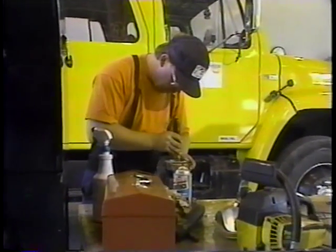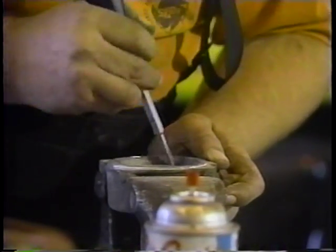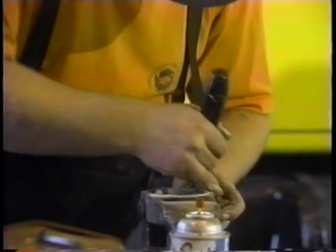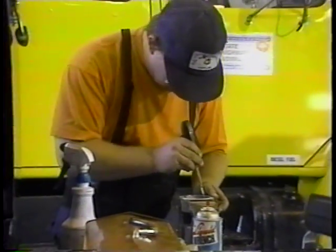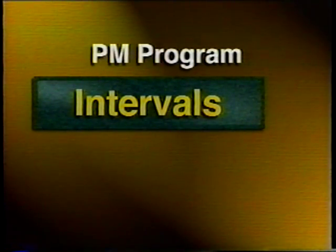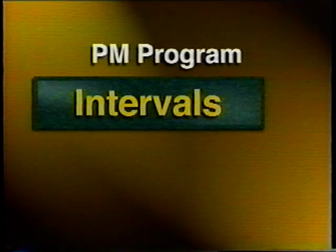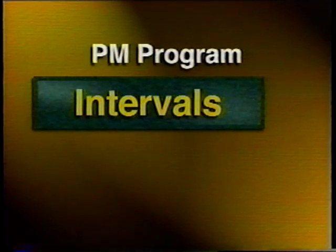The four parts of a good PM program are: PM service intervals, PM service standards, long-range PM schedules, and schedule compliance and control procedures. Part one of the PM program is PM service intervals, which can be established on the basis of time — daily or monthly — and usage — miles or hours.